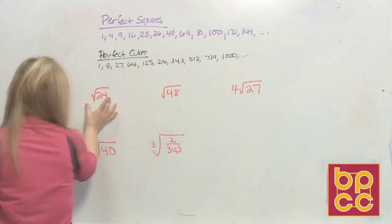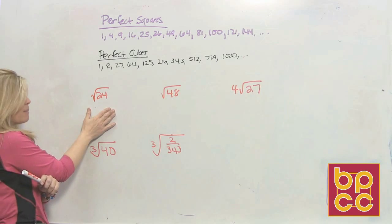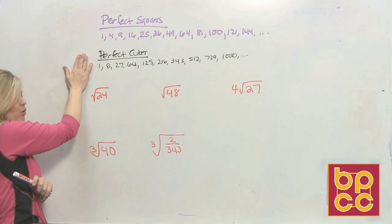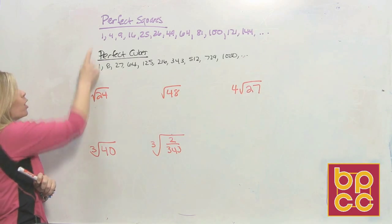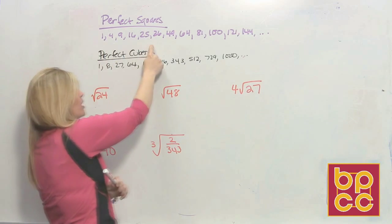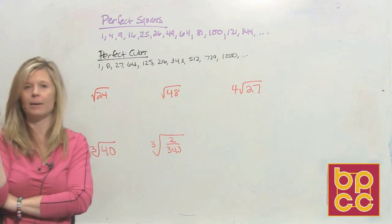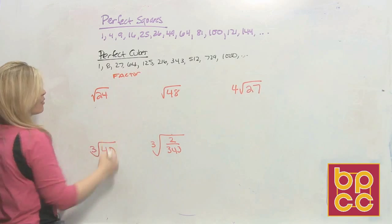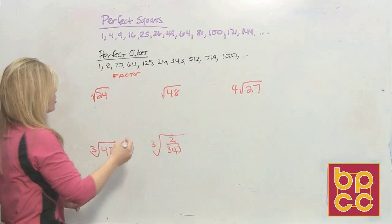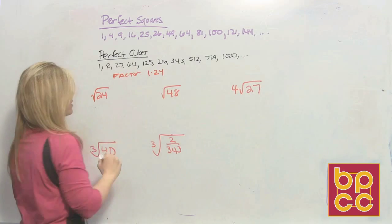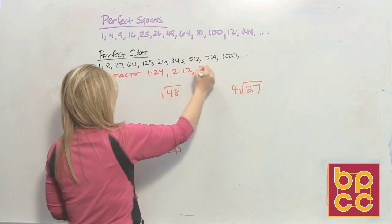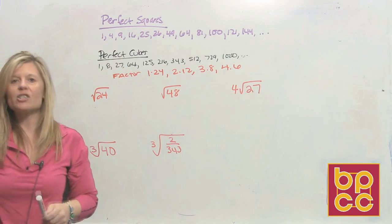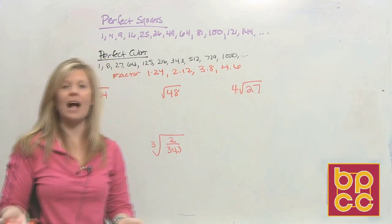I want to reduce the square root of 24. Everything we do today is based on your list — the perfect square list and the perfect cube list. Since we're reducing a square root, we look at the perfect square list. 24 is not on there, so I need to factor 24. The factors of 24 are: 1 and 24, 2 and 12, 3 and 8, 4 and 6. You cannot just randomly pick which factors you like — you need to find a factor that you're going to be able to square root.